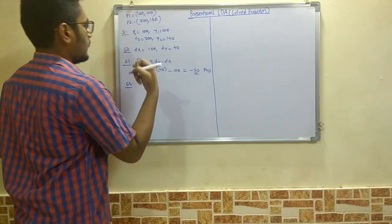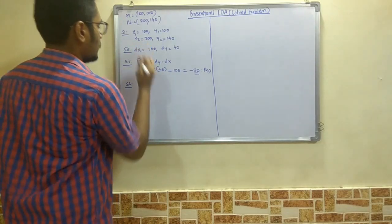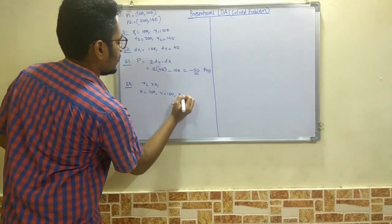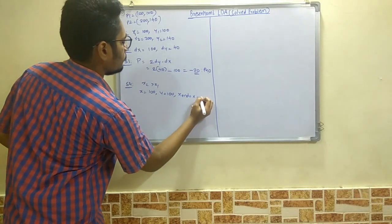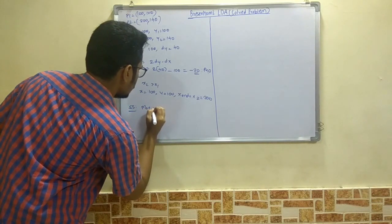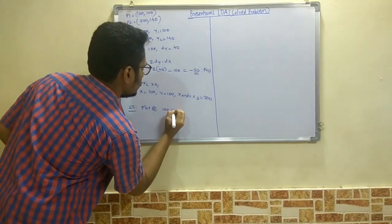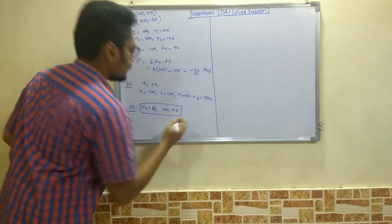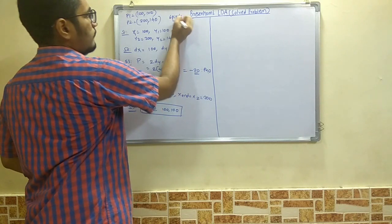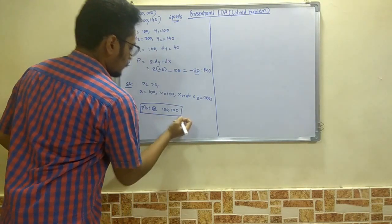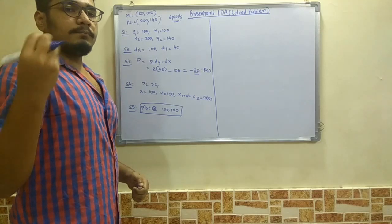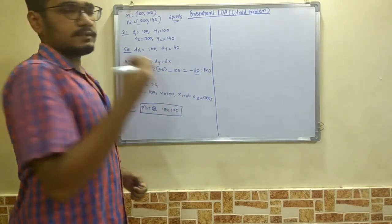Next, we check which of x1 or x2 is bigger. Since x2 is greater than x1, we initialize x = x1 = 100, y = y1 = 100, and x_end = x2 = 200. At step 5, we plot the first pixel at (x, y) = (100, 100). We need to calculate the first 6 pixels total, so 5 more remain using steps 6, 7, and 8.